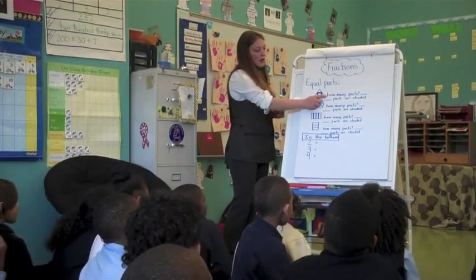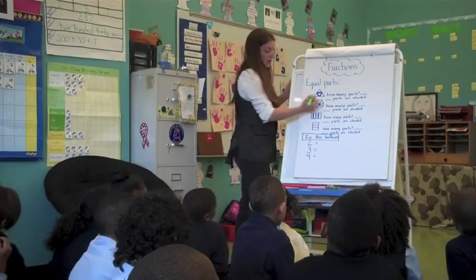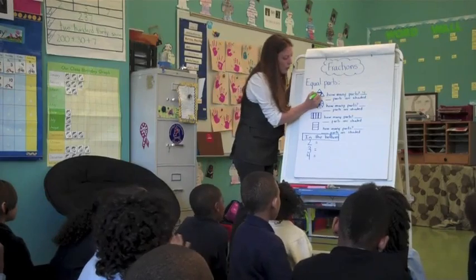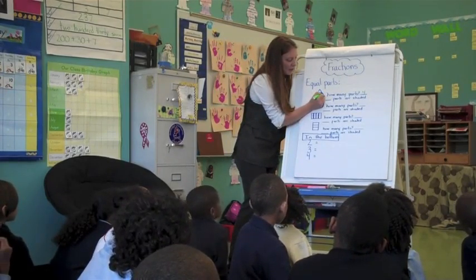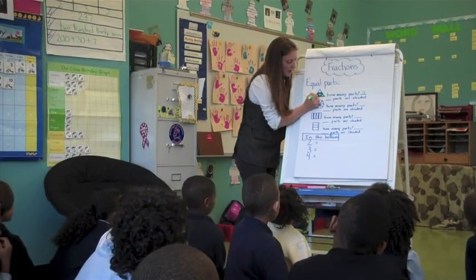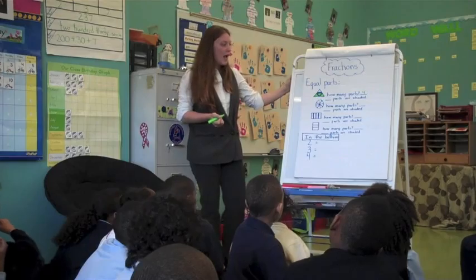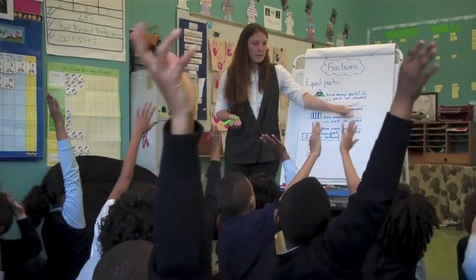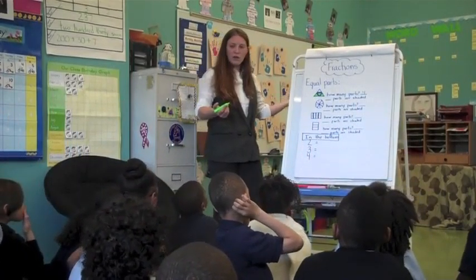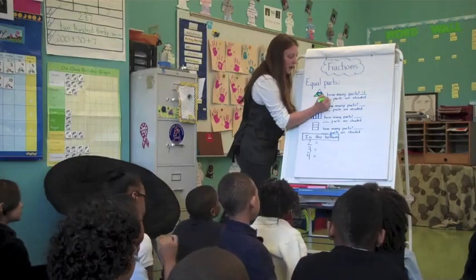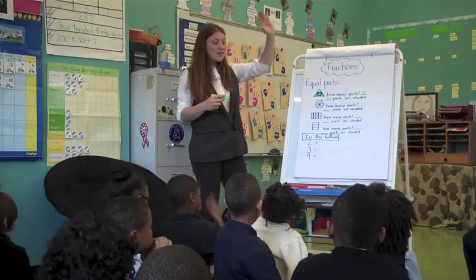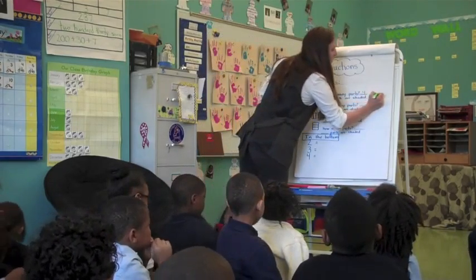So we have equal parts. If I was looking at this shape, how many equal triangles would I find inside? Four. So there were four parts. Now I'm going to use the green to make it different so you can see how many are shaded. How many parts did I color in? Samara? Three parts. Great job.